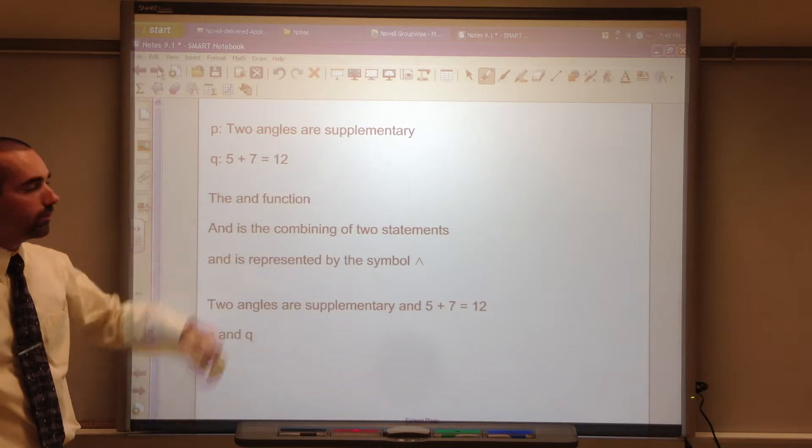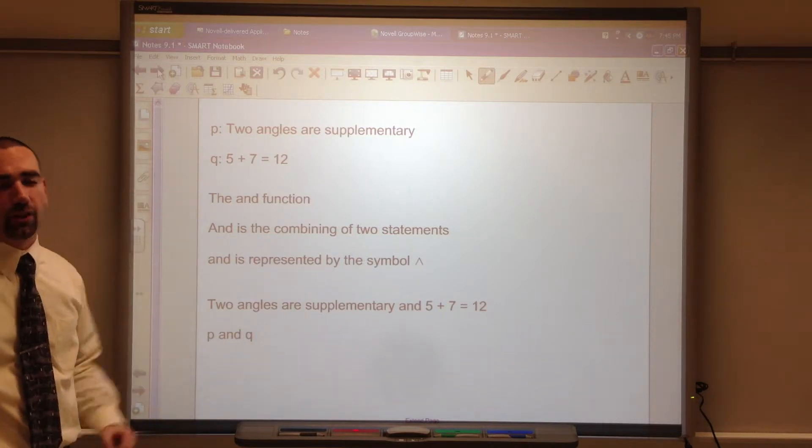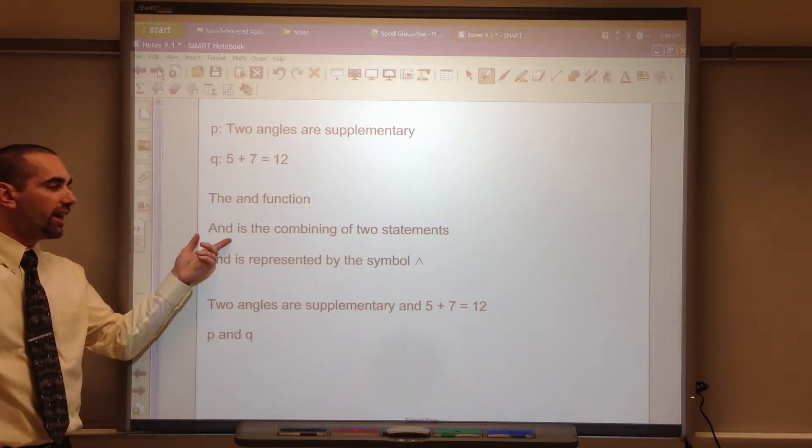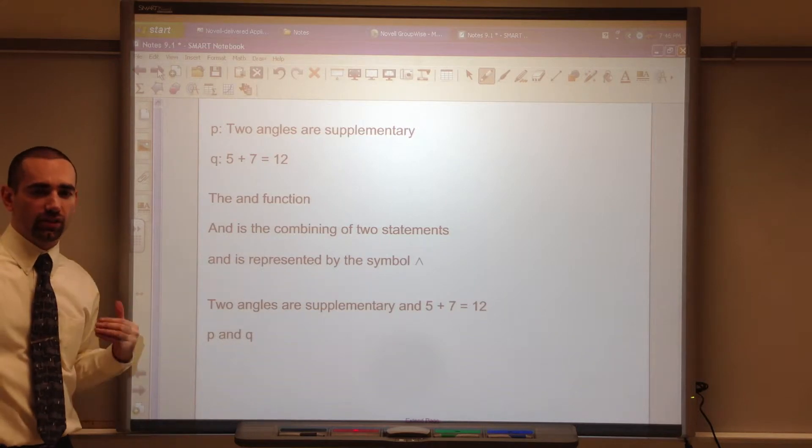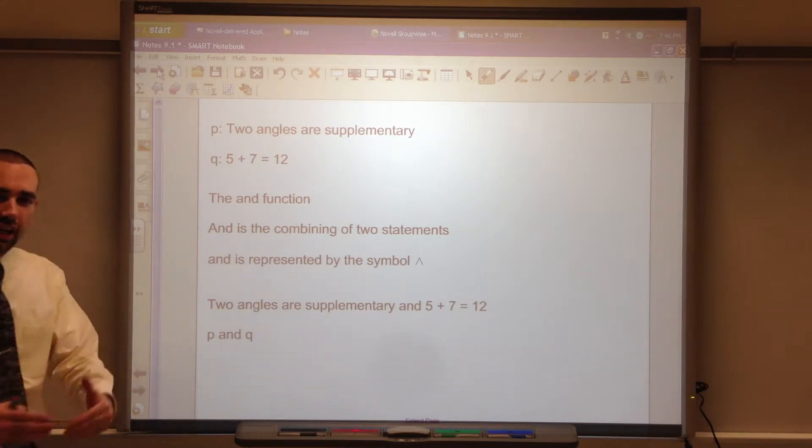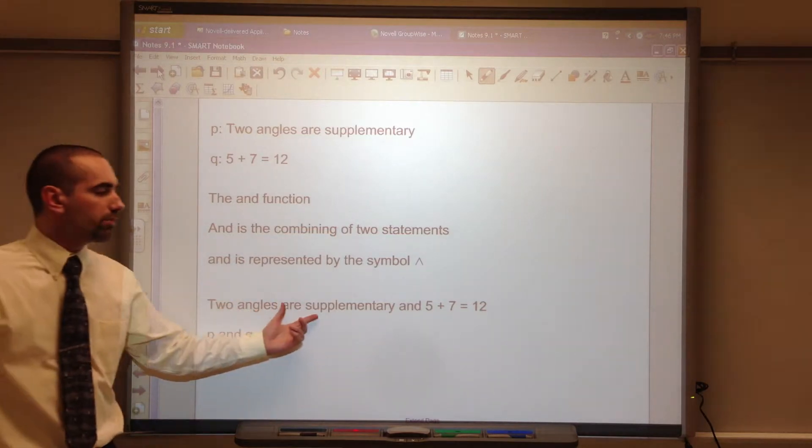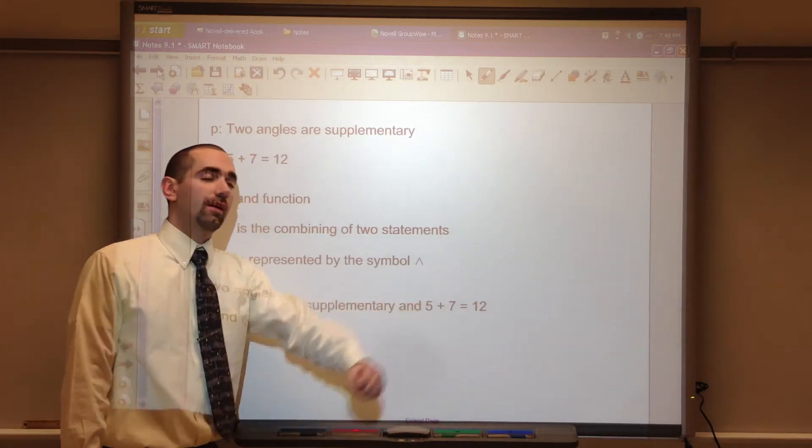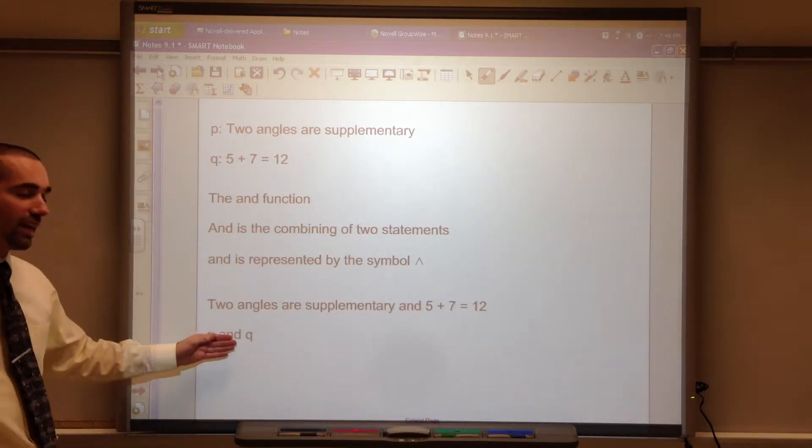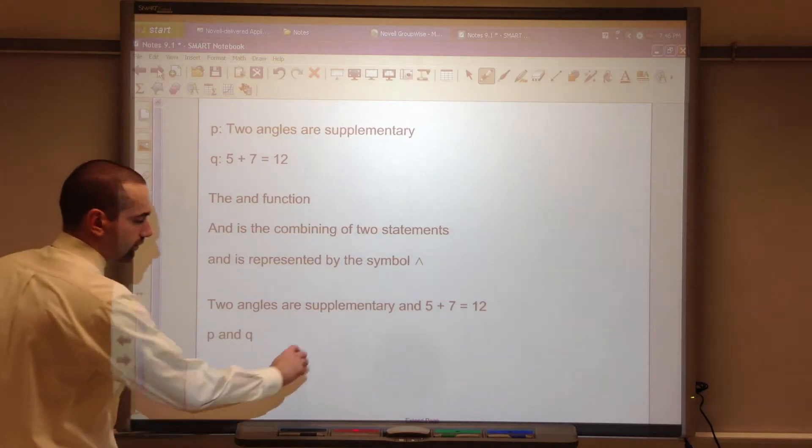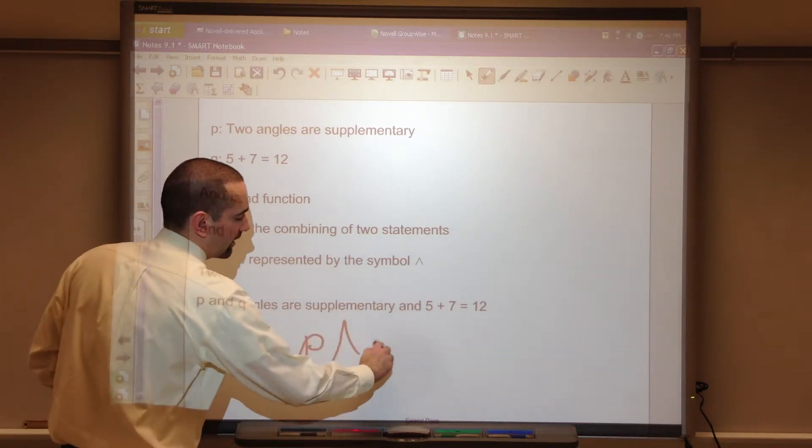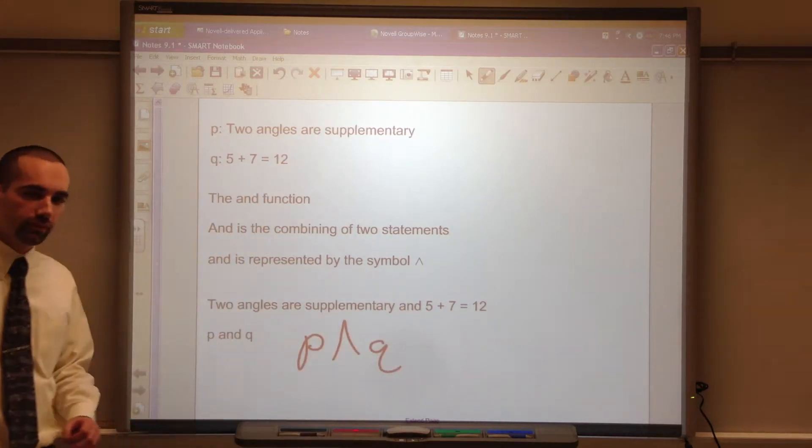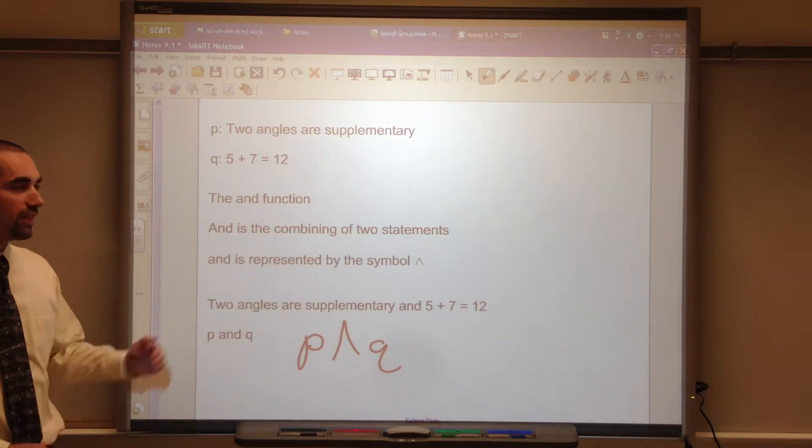P and Q are the same. We're going to look at the AND function. AND is combining of two statements. This AND that. So two angles are supplementary AND five plus seven equals twelve. P AND Q. That's the idea of the AND.